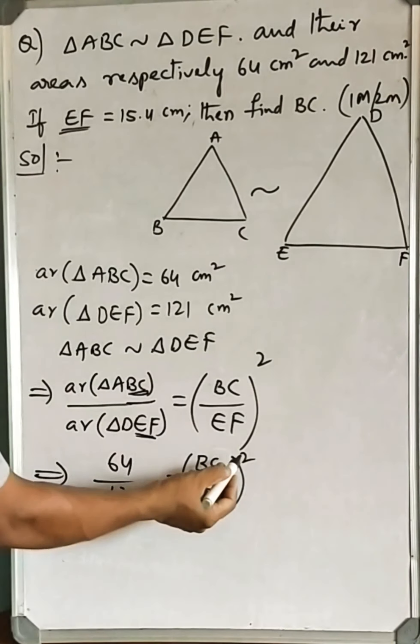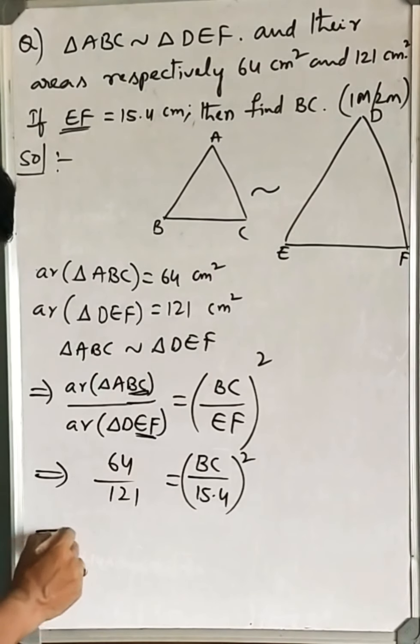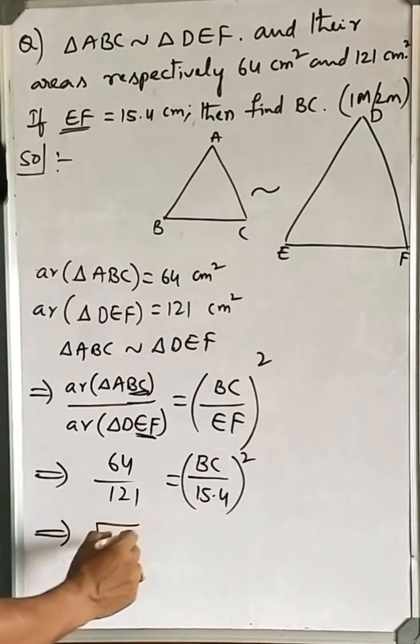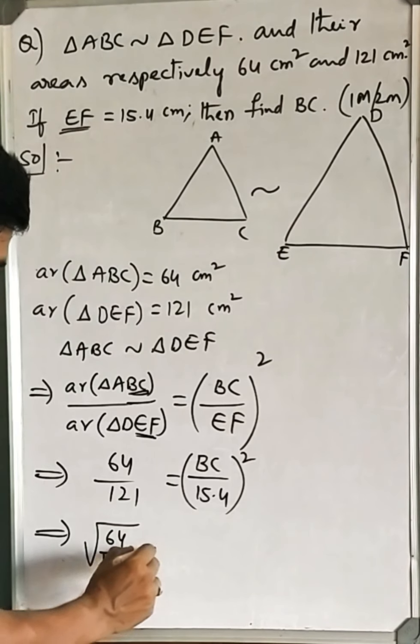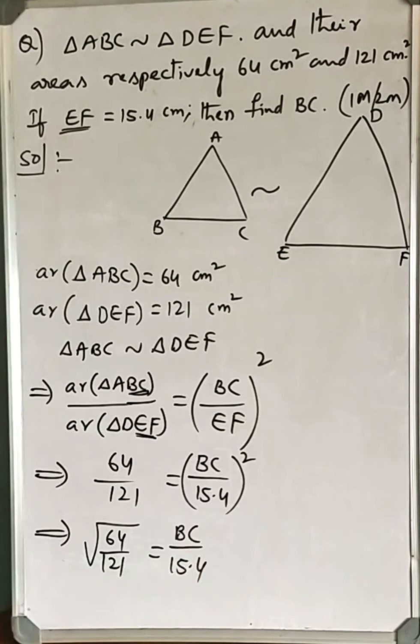Let us bring this square into the left-hand side. It becomes square root. Then root of 64 by 121 is equal to BC by 15.4.